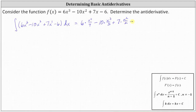Then we have minus the antiderivative of 6. Looking at the constant rule of integration, the antiderivative of any constant with respect to x is equal to the constant times x, indicating the antiderivative of 6 with respect to x is 6x. And then finally we have plus c, where c is any constant.